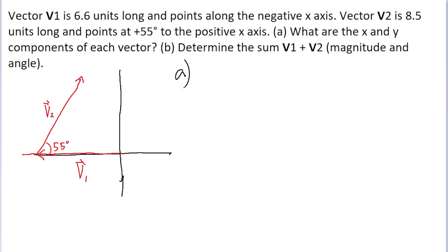The first part of the problem, part A, asks us to find the x and y components of each vector. Let's start with vector 1. We want to find v sub 1x and v sub 1y. For vector 1, this is pretty easy because vector 1 points along the x-axis, so it only has a component in the x-axis.